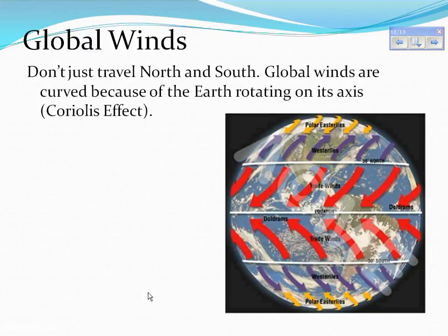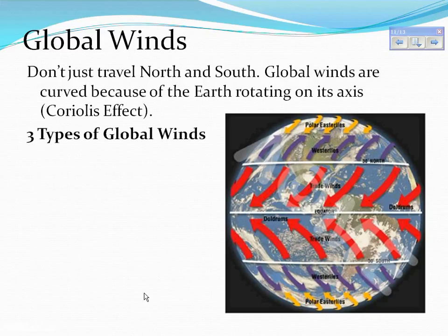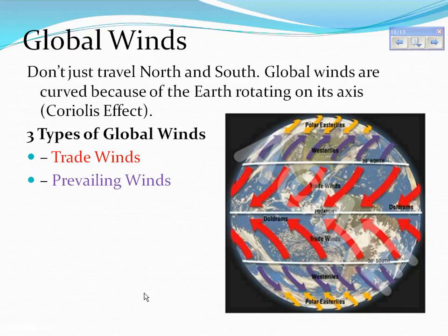Global winds don't travel north and south — they are curved because the earth is rotating on its axis, which we call the Coriolis effect. There are three types of global winds: trade winds, which are nearest the equator; prevailing westerlies, shown in purple on the globe; and polar easterlies, which are at the north and south poles.